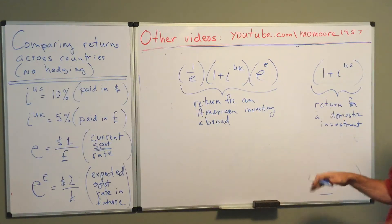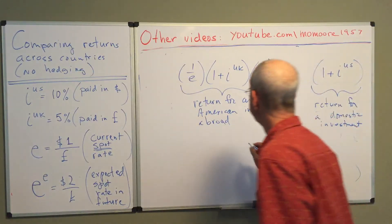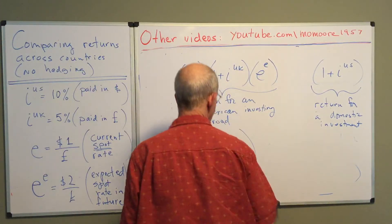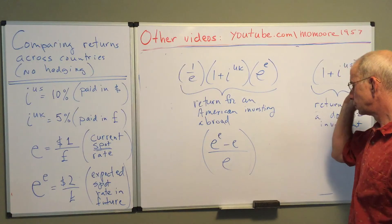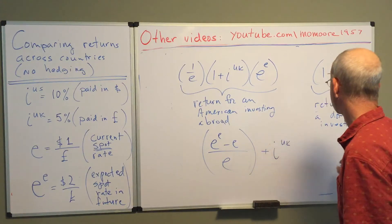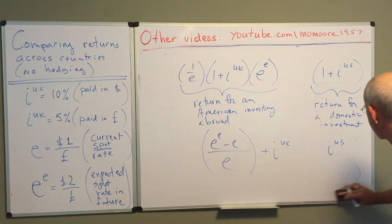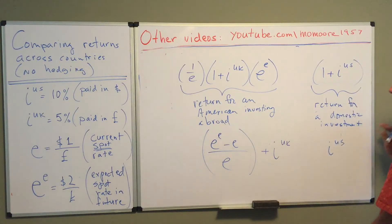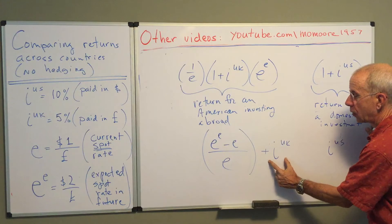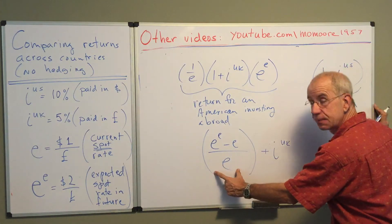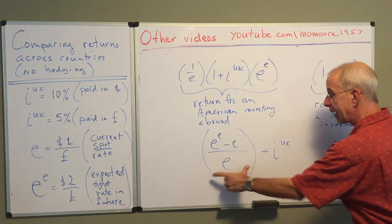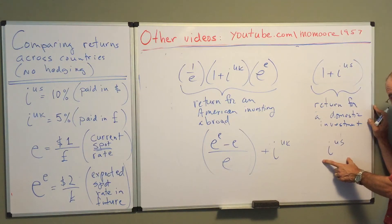We can rewrite this using some algebra, which I'm not going to go into. As the following, if you take a look at the UK investment, it can basically be written as the UK interest rate plus the expected appreciation or depreciation of the British pound. And you compare this to the simple U.S. interest rate.